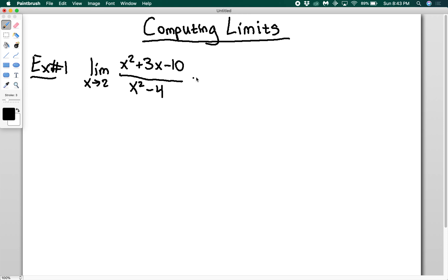We're going to have to do some algebra. We're going to factor this. On top I'm going to have x plus 5 times x minus 2, and on the bottom I'm going to have x plus 2 times x minus 2. From when we studied rational functions, you should recognize that this is a removable discontinuity, that we have a hole at x equals 2.